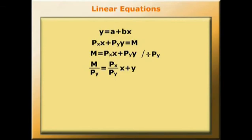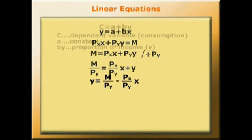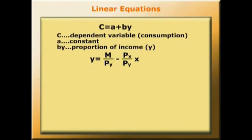So Y, bringing that over to the left-hand side, equals M over PY minus PX over PY times X. Now, M over PY is the constant term in the general form A.